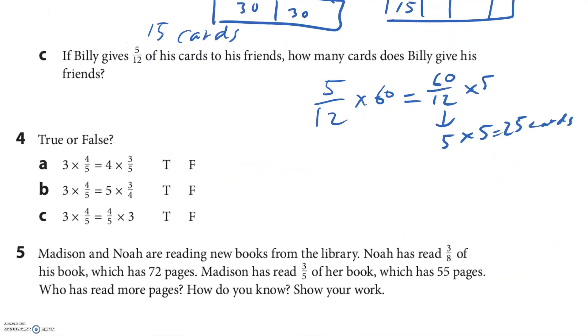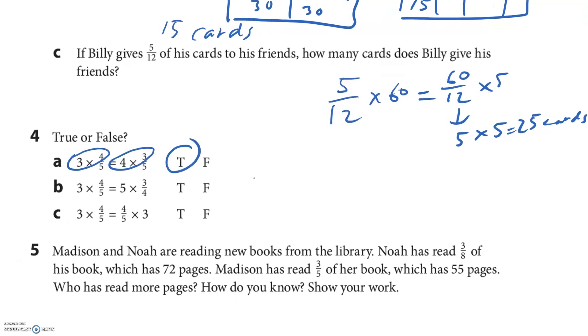True or false? Three times four-fifths equals four times three-fifths. Well, look at this. That's a twelve, right? Well, so is this. Twelve. There's a five underneath it. So true. Three times four-fifths and five times three-fourths. Three times four is twelve-fifths. And then five times three is fifteen-fifths. Those do not equal. I think this one looks good. Three times four is twelve-fifths. Four times three is twelve-fifths. They are the same, right?